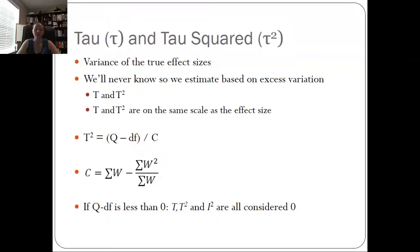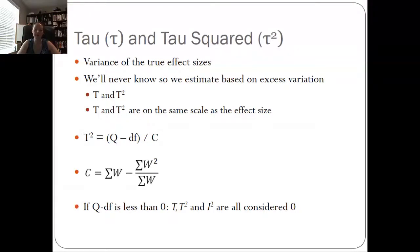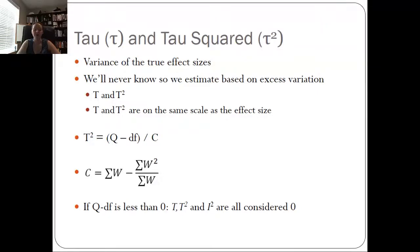We can also use the value of tau-squared — taking the square root of Q minus df divided by C — to get our tau value. Tau basically works as a standard deviation for the summary effect size, so we can use it to create our confidence interval around the summary effect size. We can say we're 95% sure that the actual effect size for the population falls somewhere between x and y. We take that tau value times 1.96 and then add and subtract it from the value of the summary effect size.